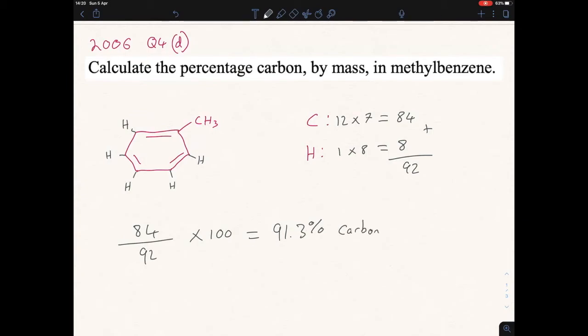The remainder would be hydrogen. So 91.3% is carbon, the remainder is hydrogen. And that's it. That's all you have to do. You just have to be able to draw out your methylbenzene. And again, just draw out the benzene ring and throw in the methyl group. We know methyl should be CH3, and we know for benzene that there should be one hydrogen on each of them.